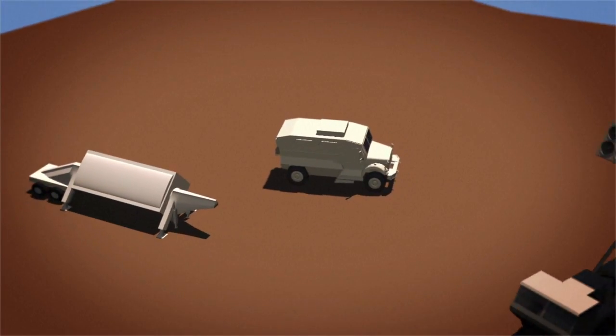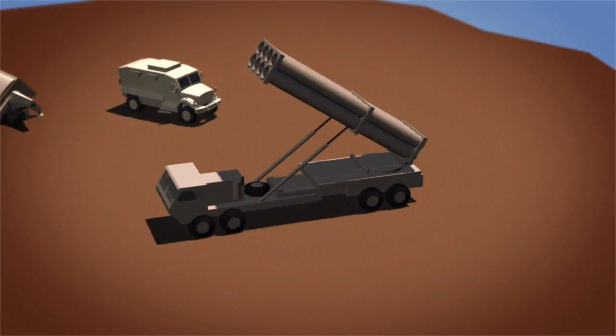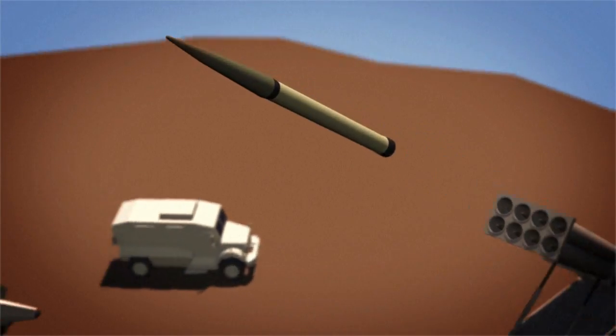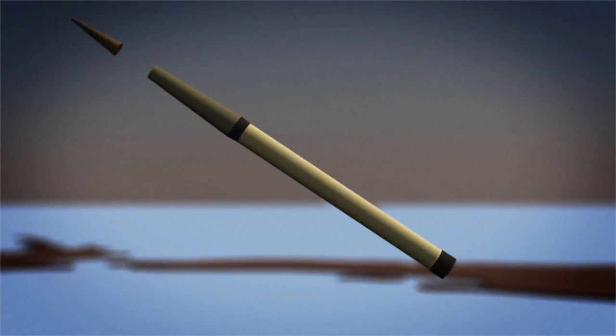The THAAD interceptor is then fired from a truck-mounted launcher, which can carry up to eight interceptors. The interceptor itself is composed of a protective shroud, interceptor or kill vehicle, and booster.